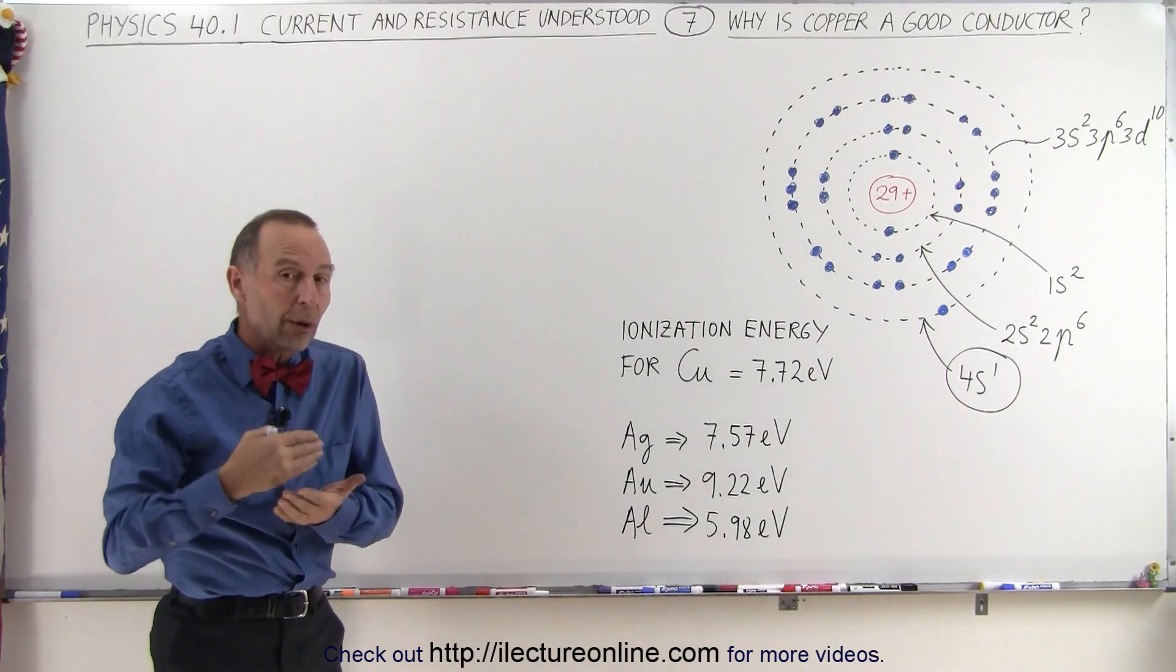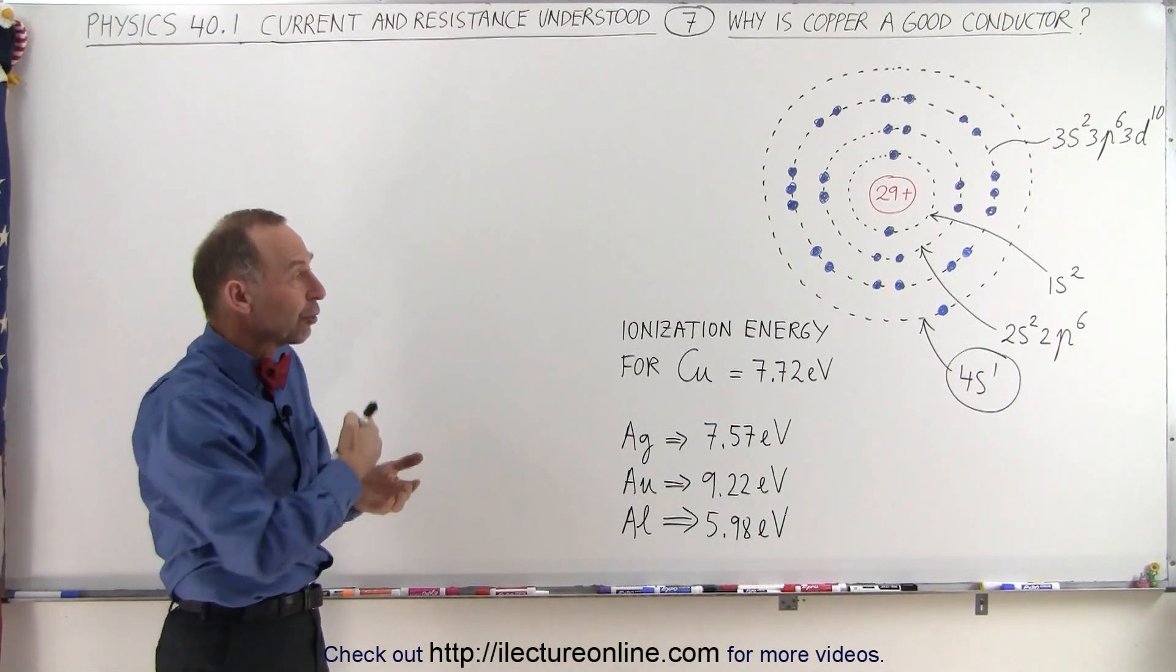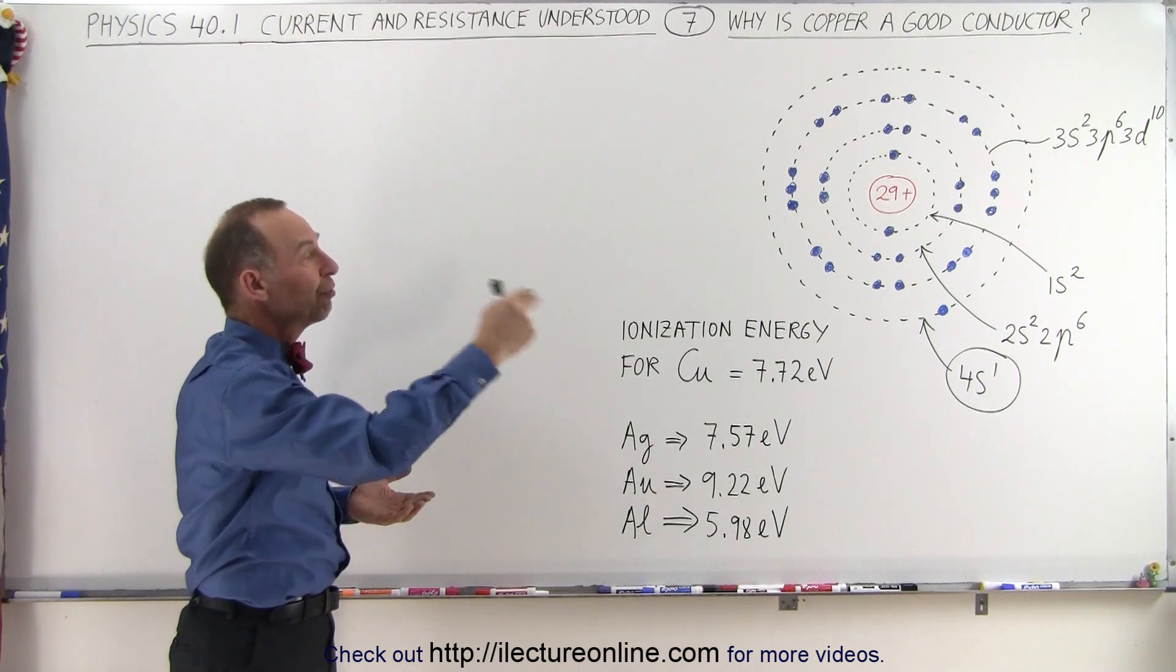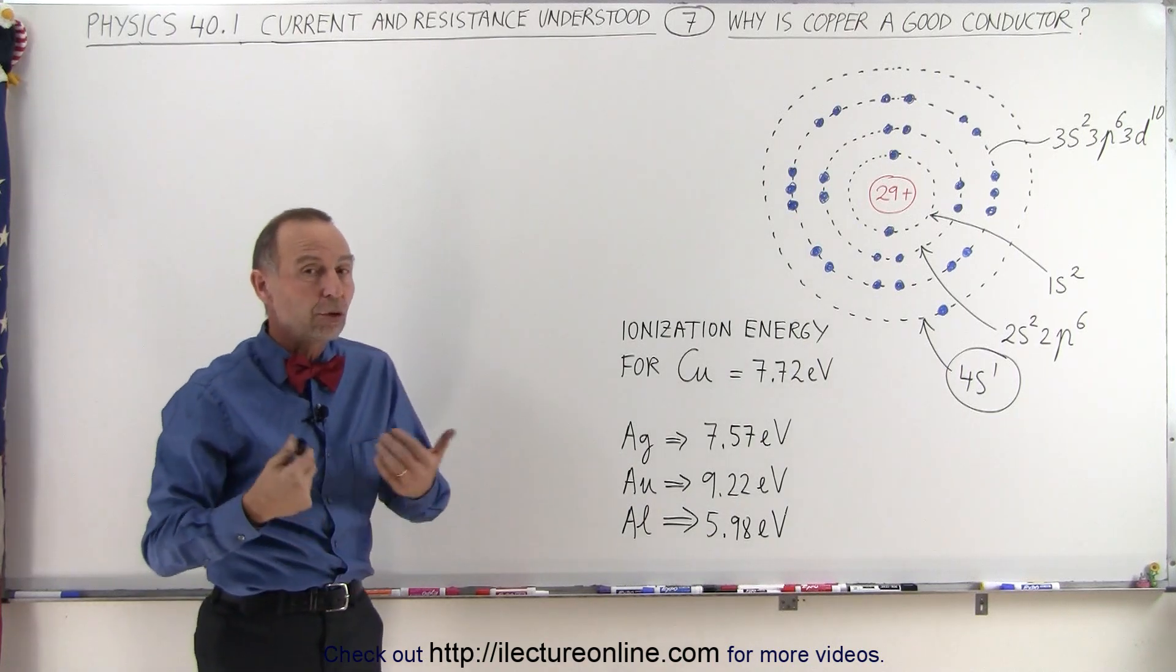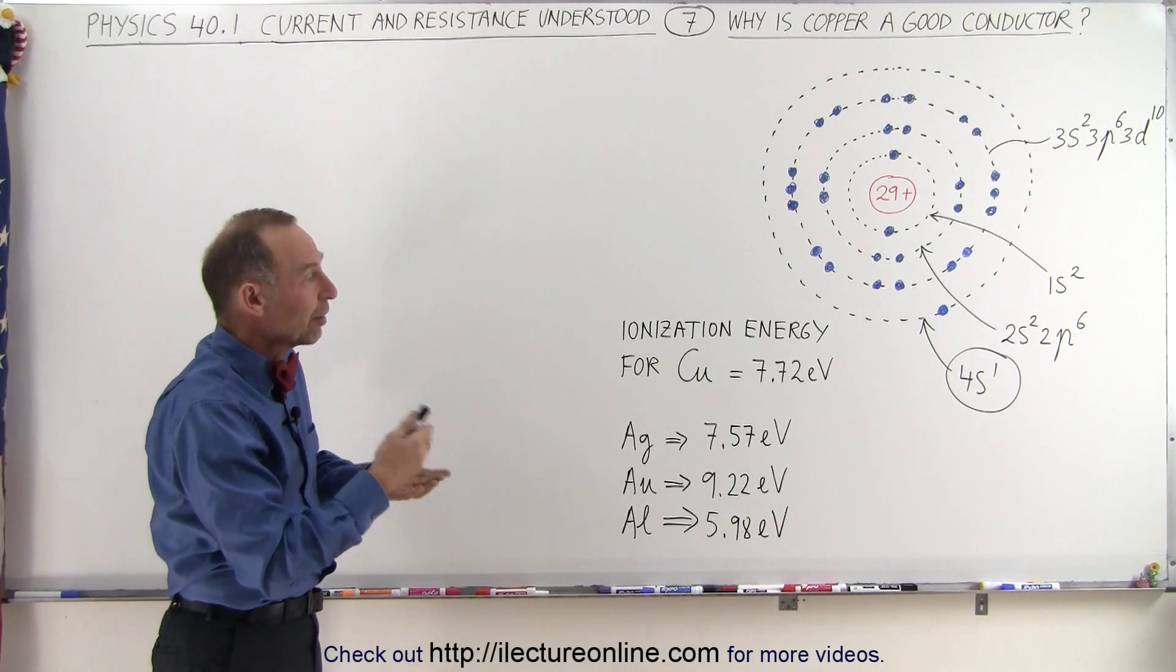If it has a low ionization energy, that means it has low resistivity, and therefore it's more easily moved from one atom to another, which causes currents to flow more freely. So copper makes a very good conductor.